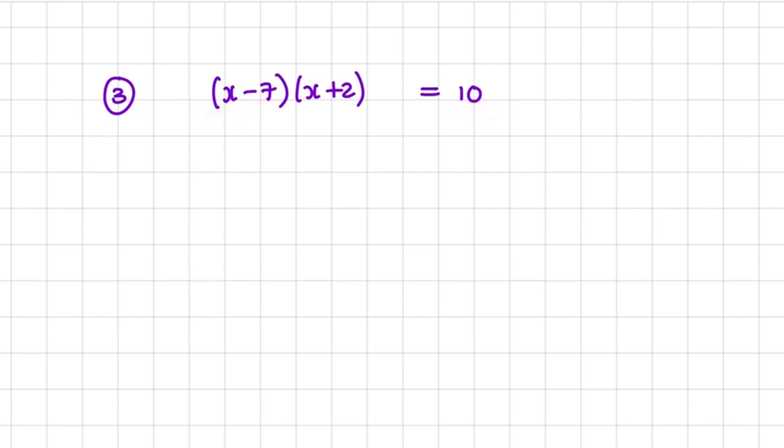What you want to do is write it in standard form. So have everything on the left equal to 0 on the right. Before we can do that, we need to multiply out.